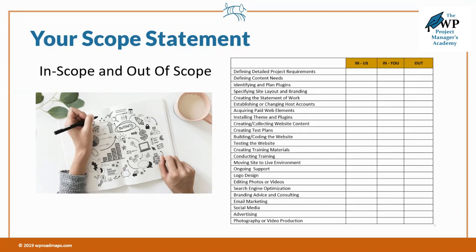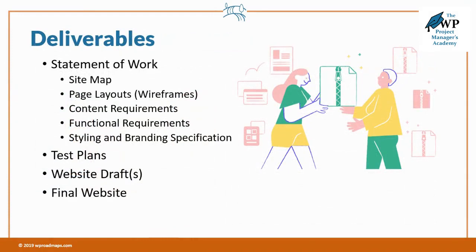So here are all the activities, but where are the deliverables? They should be listed next, along with a brief description of each one. These should be the deliverables that require approval. In our project plan, we have four major deliverables: the statement of work, the test plans, the website draft, and the final website. The statement of work is really the final deliverable after you've gotten approval on all the smaller pieces — a site map, which leads to wireframes, which validates the page layout, then validates content requirements, functional requirements, and styling and branding.